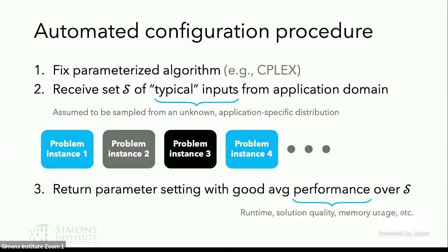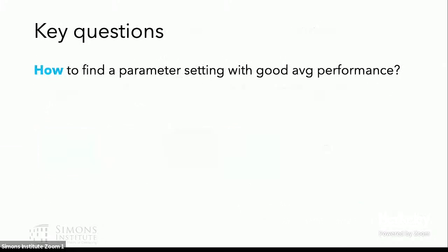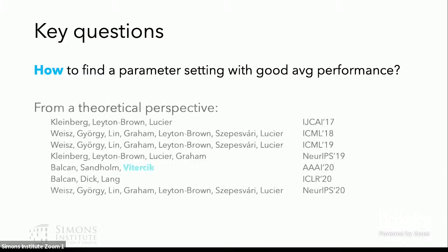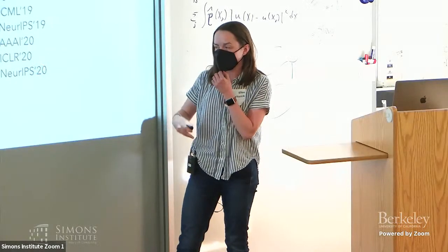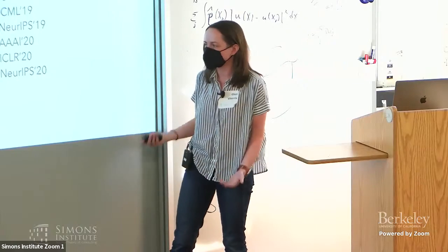So this high-level procedure raises a few key questions. First, how should I find a parameter setting which has provably good performance over my training set? This has been studied pretty extensively from an applied perspective over the past two decades. But just in the past few years, there's really been a lot of interest in this topic from a theoretical perspective. And it's a very challenging problem and lots of open questions remain.